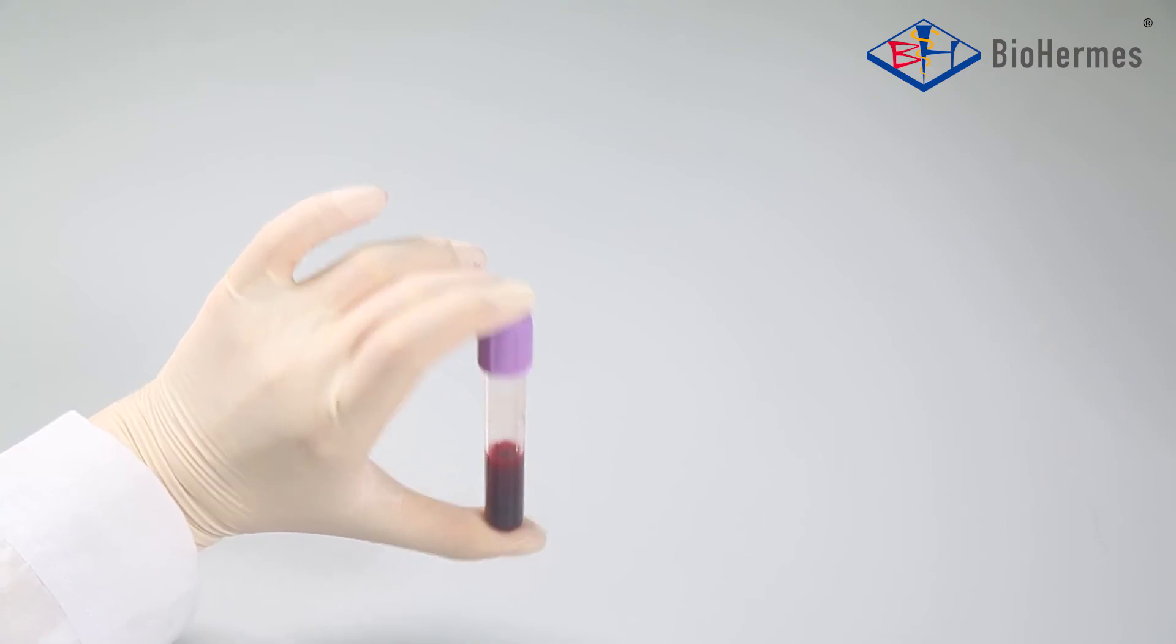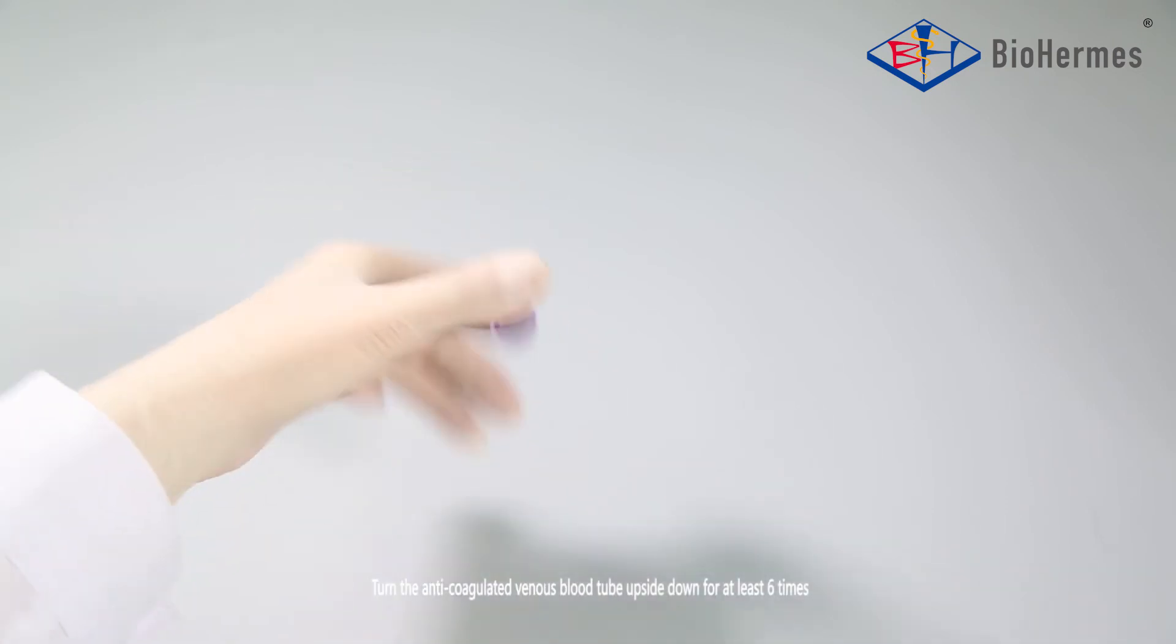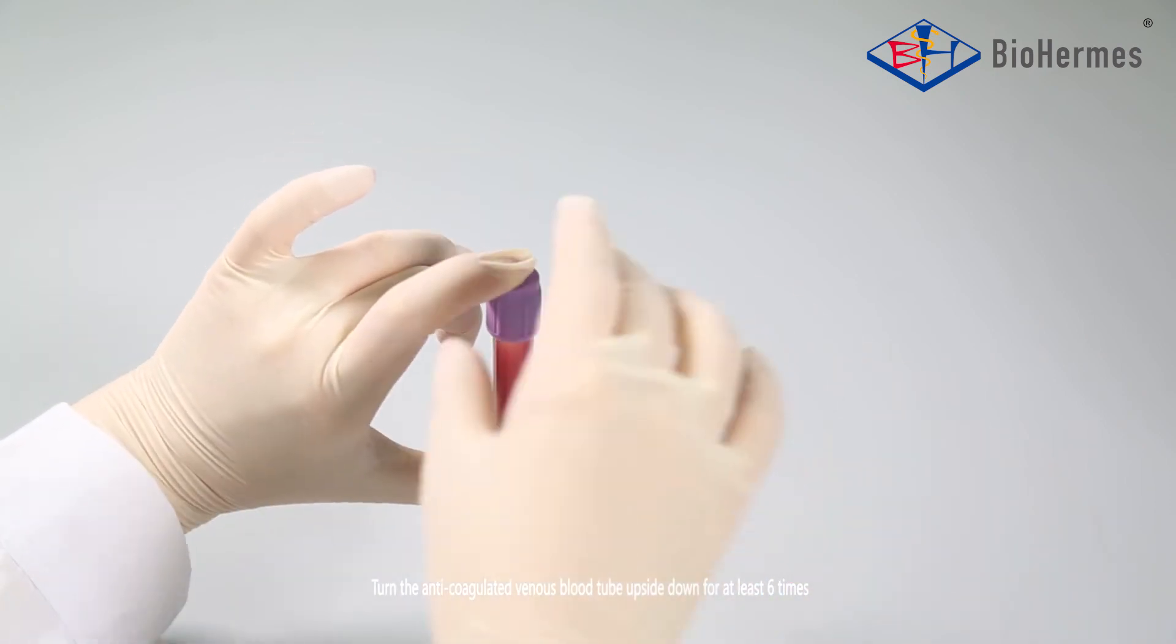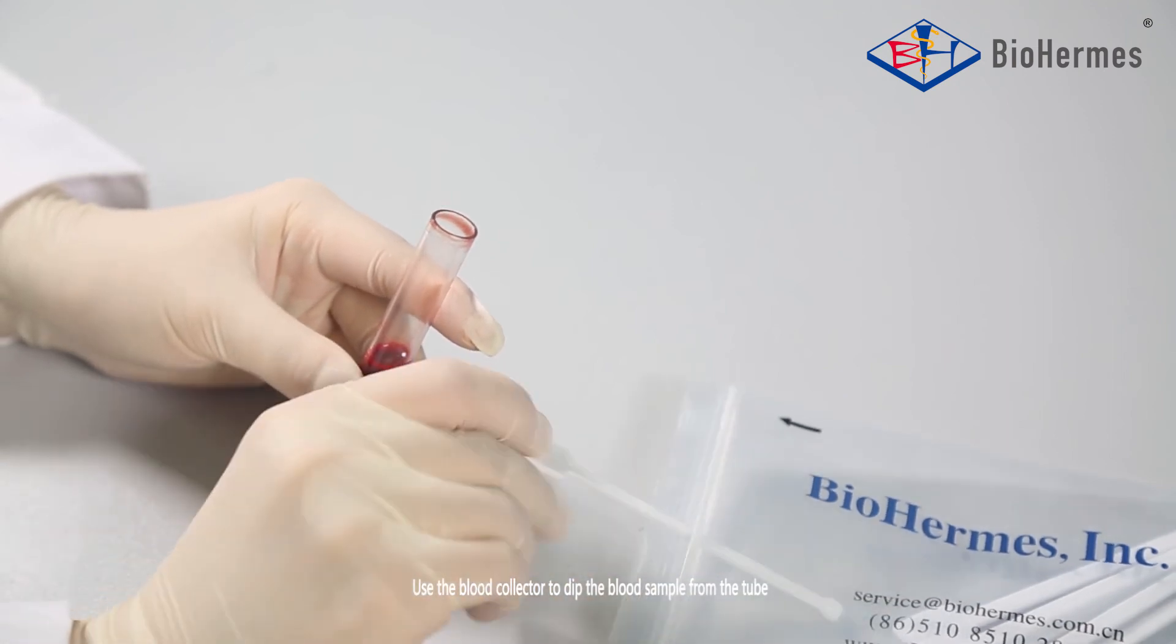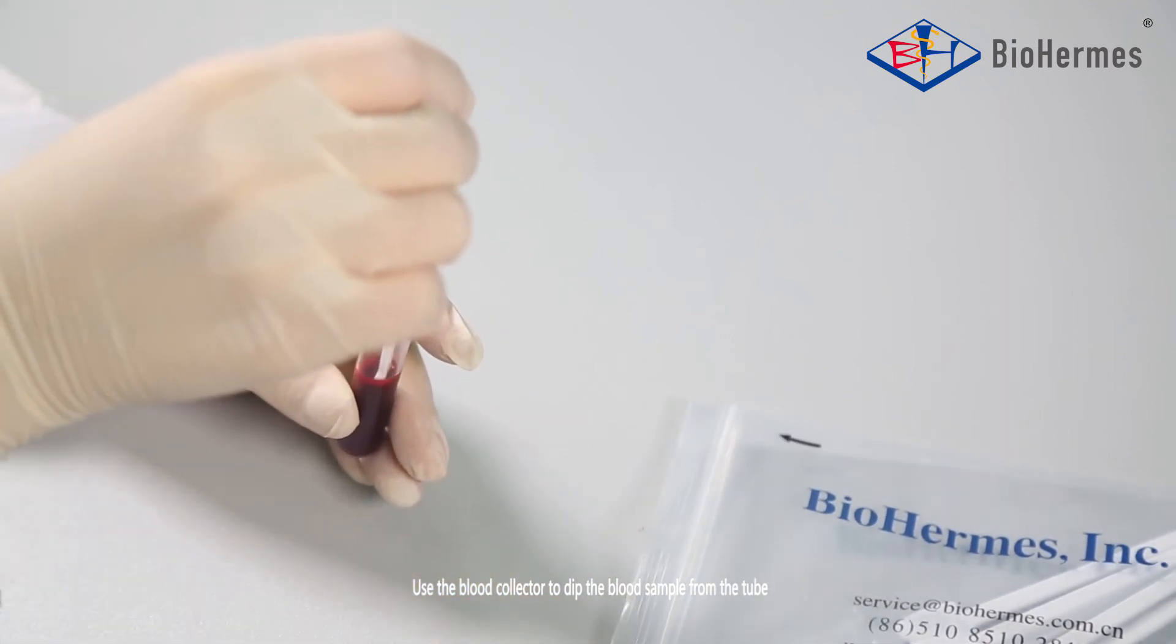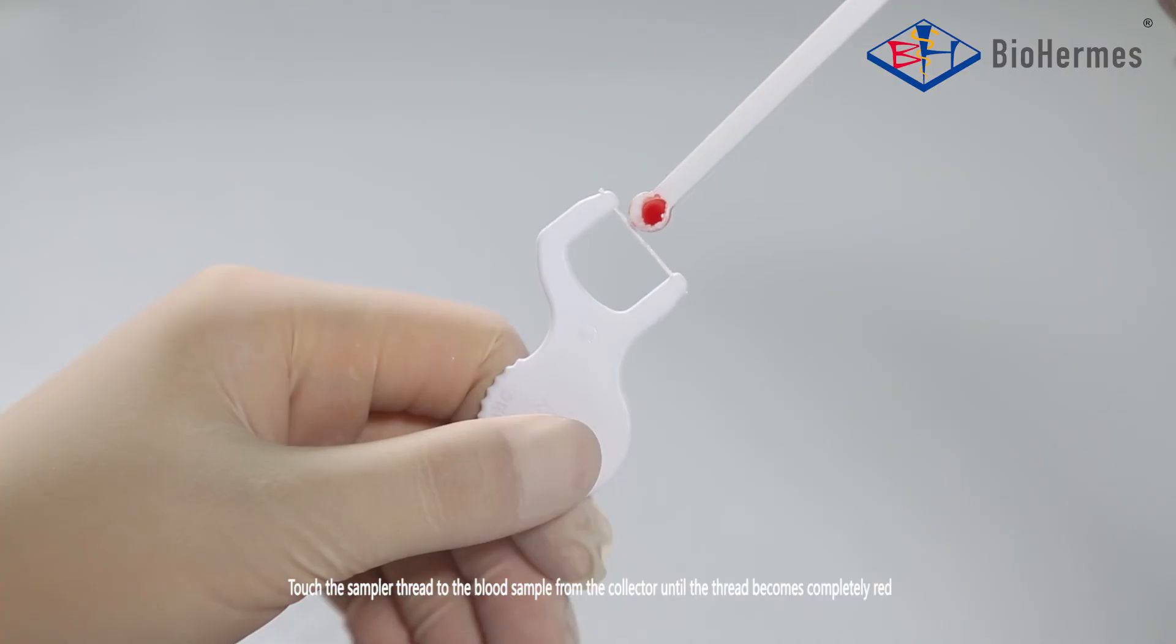Venous blood. Turn the anticoagulated venous blood tube upside down for at least six times. Use the blood collector to dip the blood sample from the tube. Touch the sampler thread to the blood sample from the collector until the thread becomes completely red.